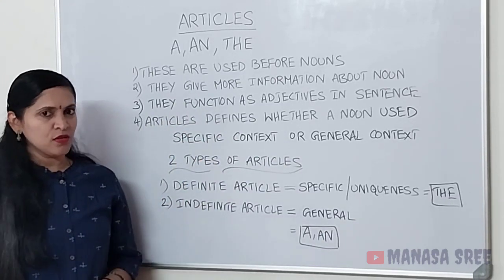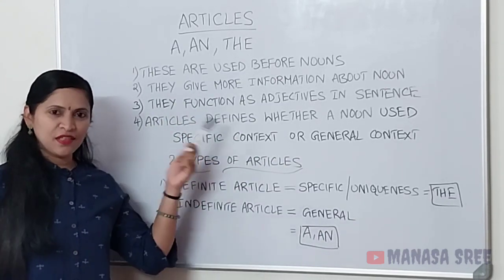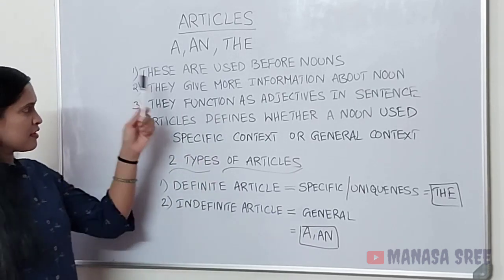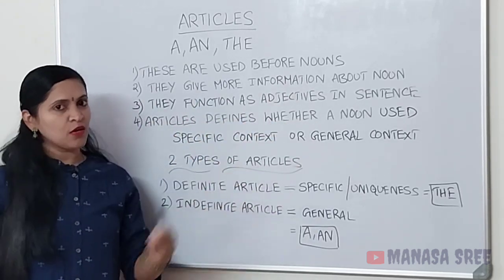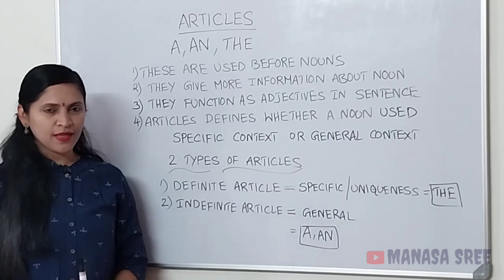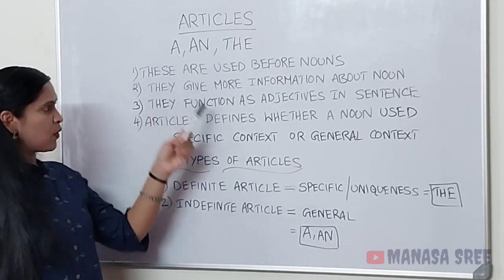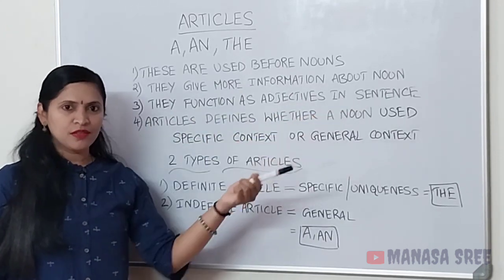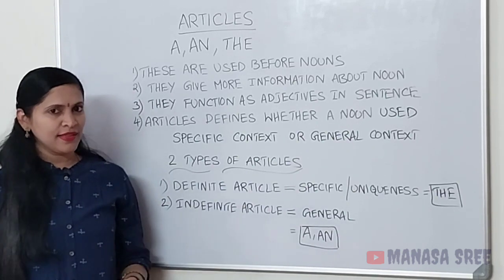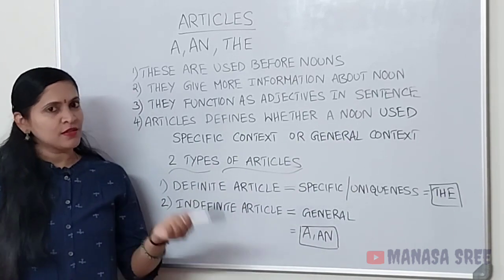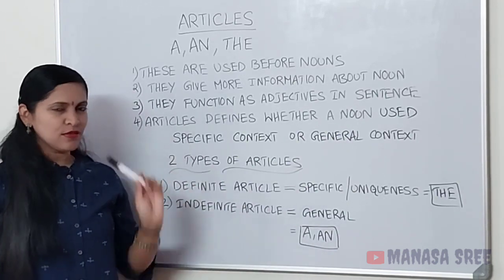Friends, articles na nao nouns munche use maatthaya thai vi. Definition: These are used before nouns. Nouns munche nao articles na use maatthaya thai vi. They give more information about the noun — place, things, names — noun bagge naamge information na thilustha yuruthe.